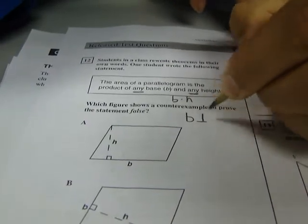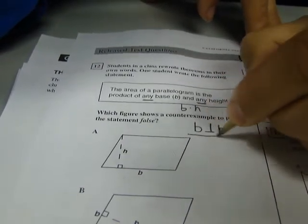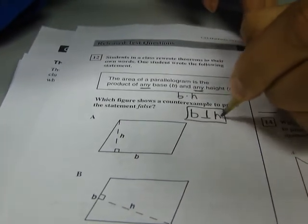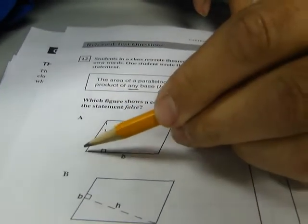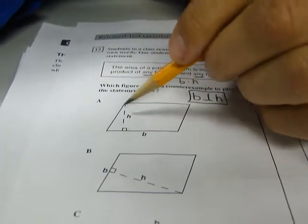But there's a key relationship the base and height must have. And it's this. The base must be perpendicular to the height. If the base is not perpendicular to the height, then it can't count. So in this case, here's the base. Here's the height. They're perpendicular.